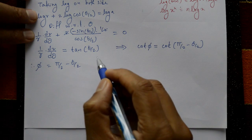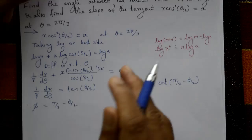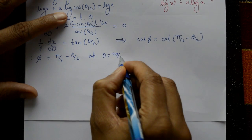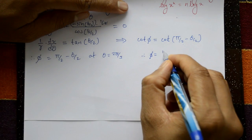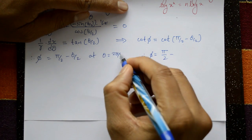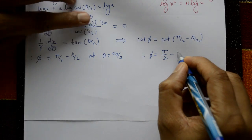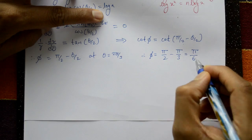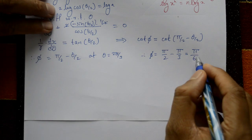Now find angle ψ. At θ = 2π/3, substituting: φ = π/2 − θ/2 = π/2 − (2π/3)/2 = π/2 − π/3 = π/6. So φ = π/6.